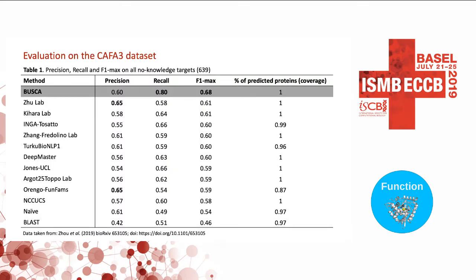We performed two experiments. First, we compared BUSCA against other methods evaluated during the CAFA official evaluation procedure, using the no-knowledge set. Results show precision, recall, F1 max, and coverage. BUSCA precision is a bit lower than other tools in the benchmark, but we report a very high recall of 0.8. Overall, the method achieves 0.68 F1 measure, which is 7 points higher than the top-performing method during CAFA.